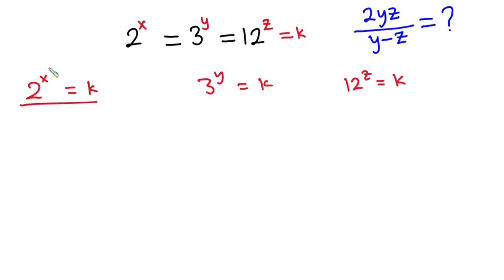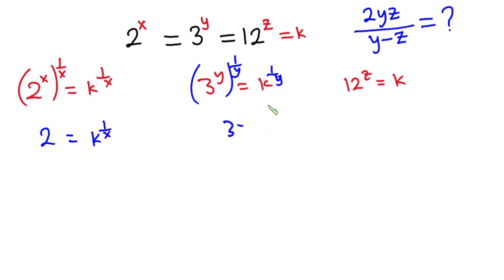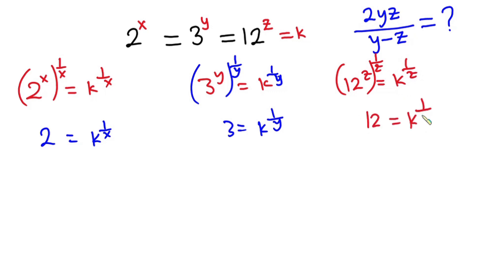Now from the first equation, if I raise each side to the power 1 over x, applying the rules of indices, I have 2 is equal to k to the power 1 over x. Likewise, if I raise each side of the second equation to the power 1 over y, we have 3 is equal to k to the power 1 over y. And for the third, raising each side to the power 1 over z, I have 12 is equal to k to the power 1 over z.